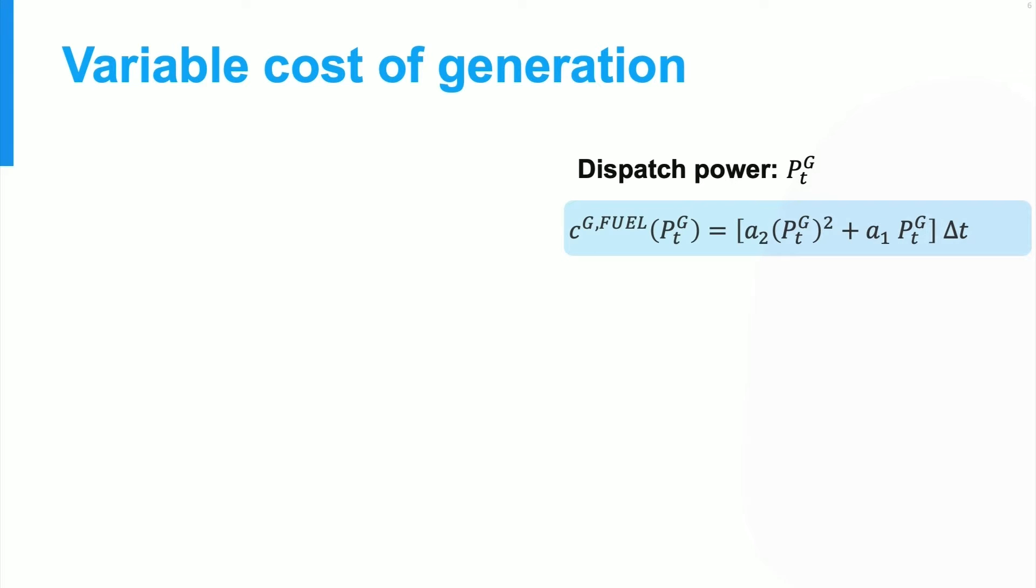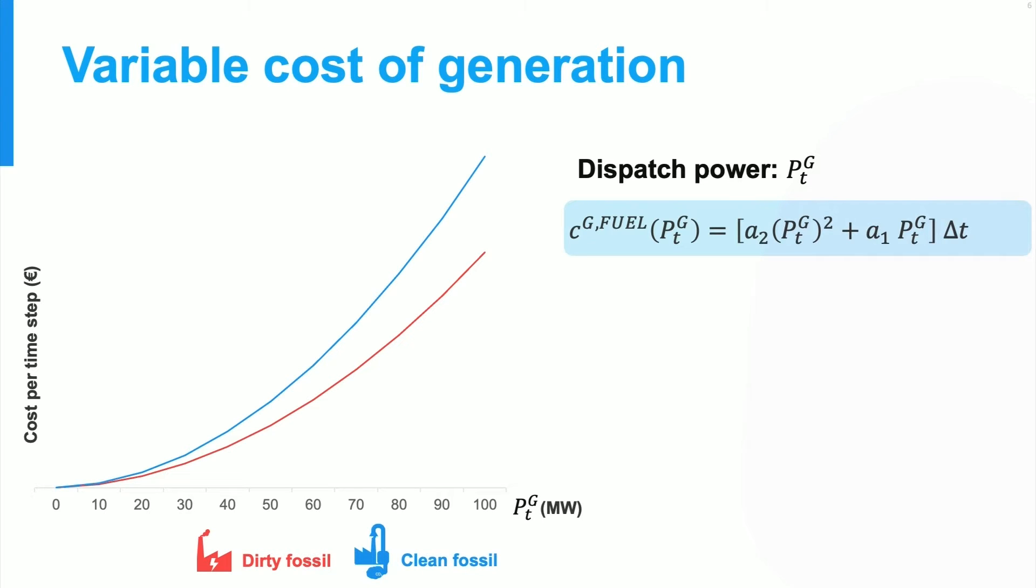Now in terms of this dispatch variable, we can define a function for the cost of generation in the time interval. And it's common to use a quadratic function for this purpose, with coefficients a1 and a2 that we must define. You can see such a curve here on the left for the dirty fossil plant. In this case, the generator becomes less efficient at high power levels. So you can see that this cost curve becomes steeper for each additional megawatt produced.